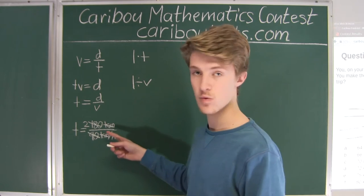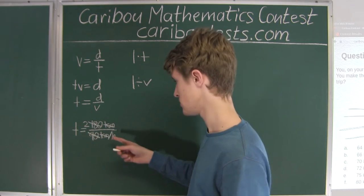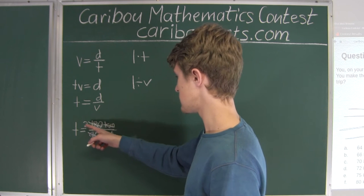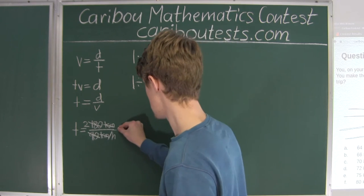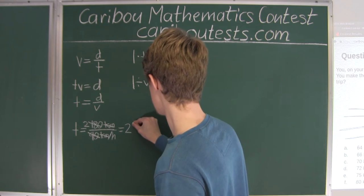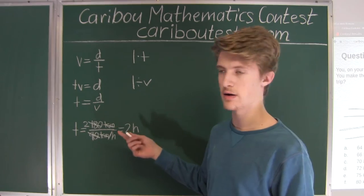We are dividing by a fraction, which means we can just multiply by its reciprocal. So instead of 2 divided by 1 over H, that would be 2 times H, which is equal to 2H. So it took 2 hours for that 180 kilometers.